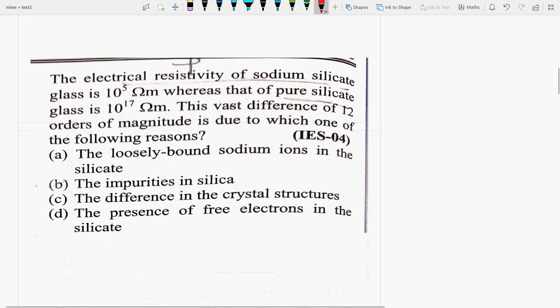Next question hai, the electrical resistivity, this is your electrical resistivity, that is the reciprocal of conductivity of sodium silicate glass is 10 to the power 5 ohm meter, whereas that of pure silicate glass is 10 to the power 17 ohm meter. This vast difference of 12 orders of magnitude is due to which one of the following reasons?